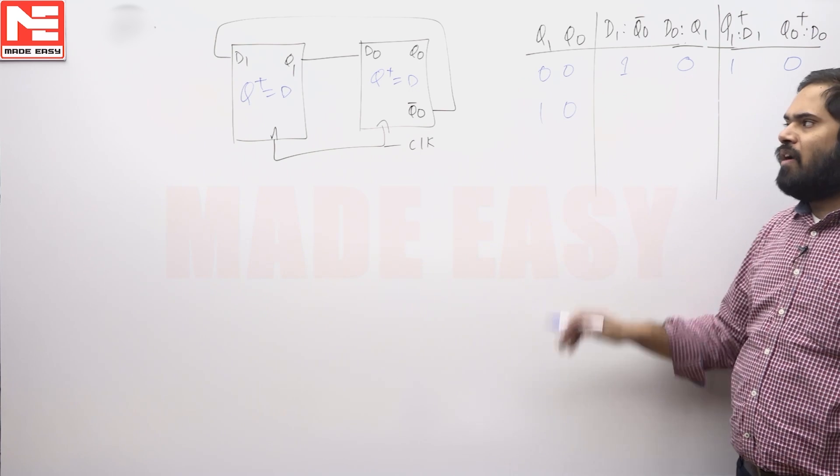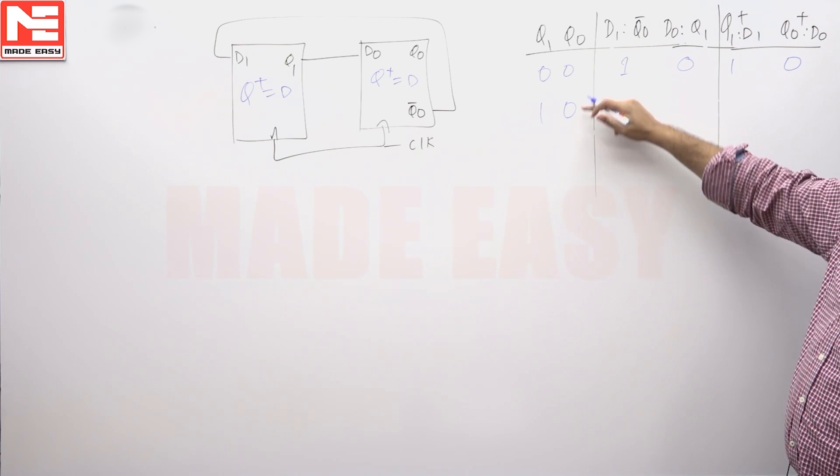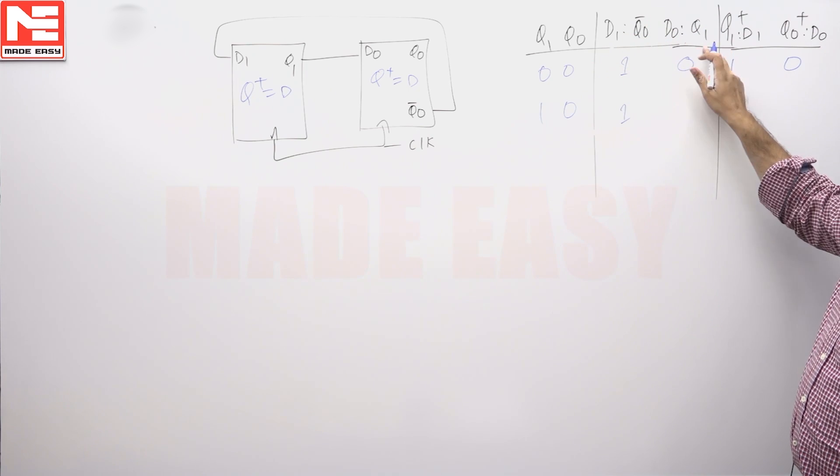Again same. So for the 10, now we will try to find to get the next possible state. So D1 is Q naught bar, Q naught bar means 1. D naught is Q1, Q1 means basically 1.